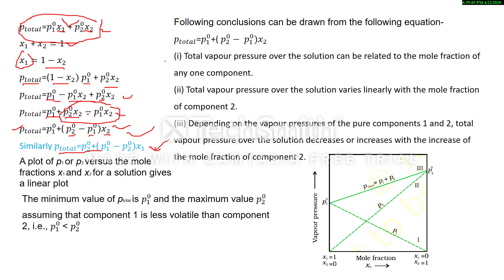From these equations we can draw some conclusions. Total vapor pressure over the solution can be related to the mole fraction of any one component, either X1 or X2. Total vapor pressure varies linearly with the mole fraction of each component. These are linear equations. Depending on P01 and P02, total vapor pressure decreases or increases with the increase of the mole fraction of component 2 or component 1.